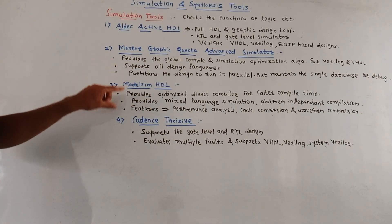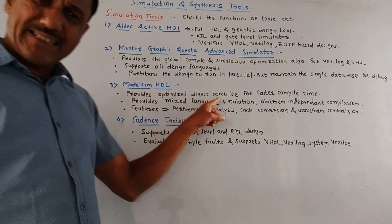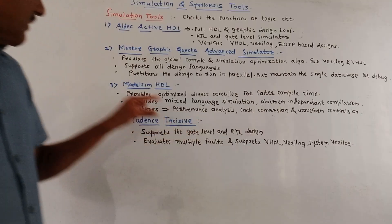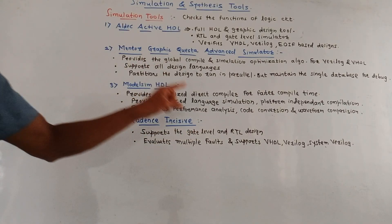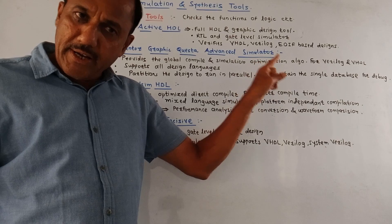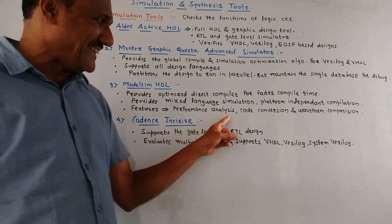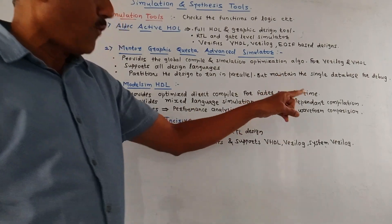Third is ModelSim HDL. It provides optimized direct compiler for faster compiler time. Then it provides mixed language simulation and platform independent compilation. Its features include major features include performance analysis then code conversion and waveform comparison.